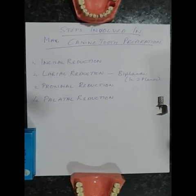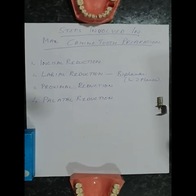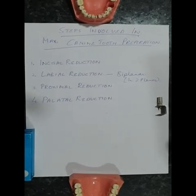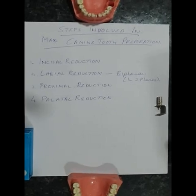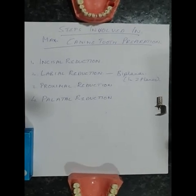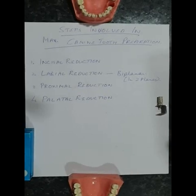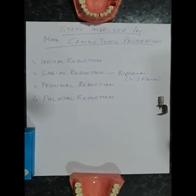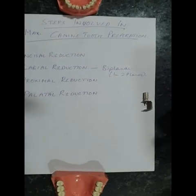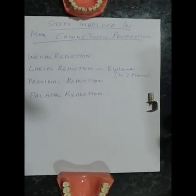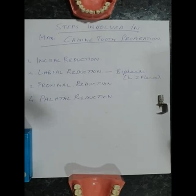Once you have finished flattening the incisal edge of a maxillary canine in two planes — the mesial and the distal slopes — then comes the second step, which is labial reduction. Similar to the maxillary central incisor, labial reduction for a maxillary canine is again a biplanar reduction.